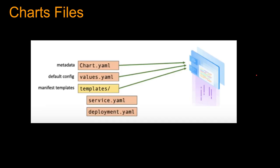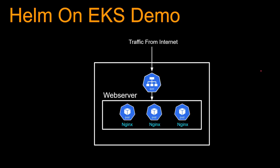Going back to the chart file structure: generally there is a metadata file called chart.yaml, a default config file, and all the manifests are under a templates folder — services are in service.yaml and deployments are in deployment.yaml. Now let's do a Helm on EKS demo using the Nginx web server.